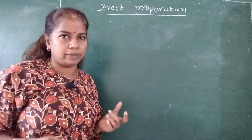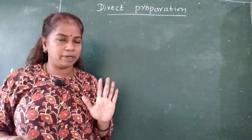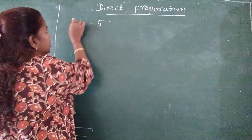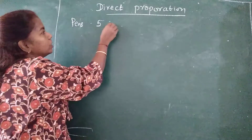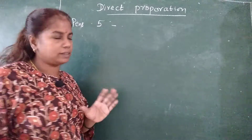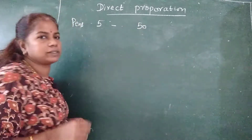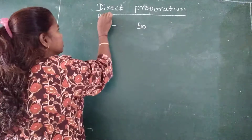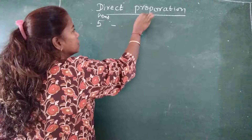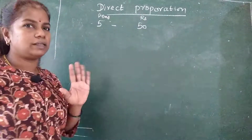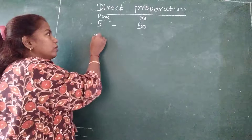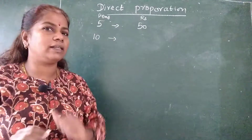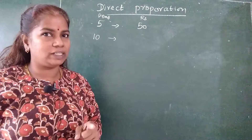Now what is this direct proportion? Suppose I purchase 5 pens. The cost of 5 pens is 50 rupees. Now if I want to purchase 10 pens, the rate will increase or decrease? Obviously it will increase.